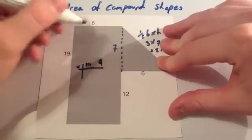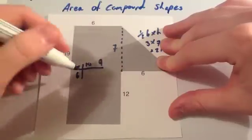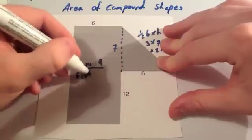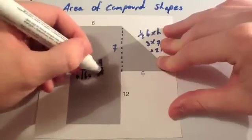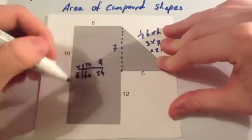10 times 9, and your times by 6. 6 times 10 is 60. 6 times 9 is 54. Then we're going to add them two together.